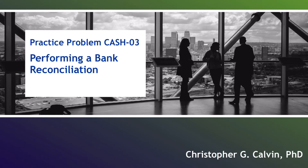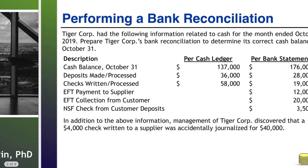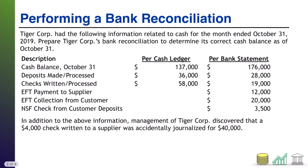Hi everyone. Welcome to Practice Problem Cash 03. In this one, we are going to perform a bank reconciliation. Tiger Corps had the following information related to cash for the month ended October 31, 2019. Prepare Tiger Corps' bank reconciliation to determine the correct cash balance as of October 31.